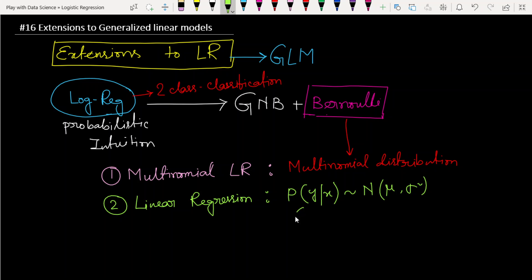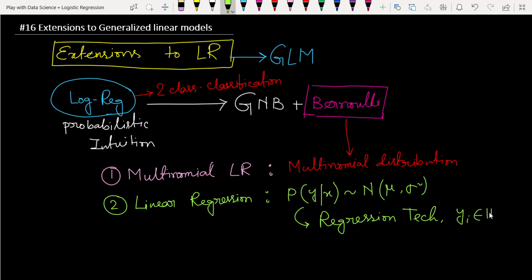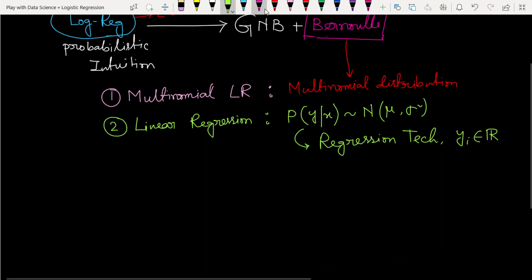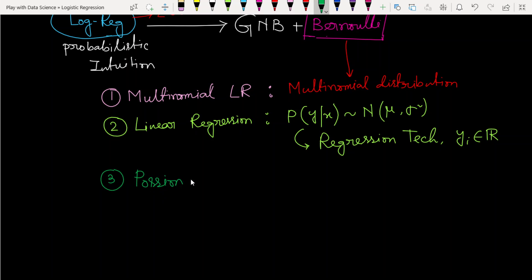For multi-class classification it is truly a regression technique — classical regression, not a classification technique. In the linear regression case, the yi values belong to real numbers, they are not integers. The next model is Poisson regression.